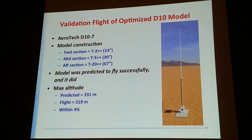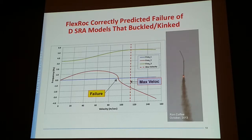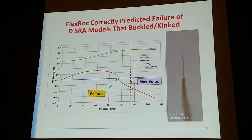Here's the second model, the D10 model — all double wall construction as the program suggested. Fin sizes were also as suggested by the program. The rocket launched and the altitude was within 4 percent of predictions. Additionally, working with Tim Van Milligan and others in the Colorado area, one illustrated case by Ron Coffey involved flying a D10 on fairly flexible structures — they buckled, and FlexROC said they should have. So the program successfully predicts both success and failure.